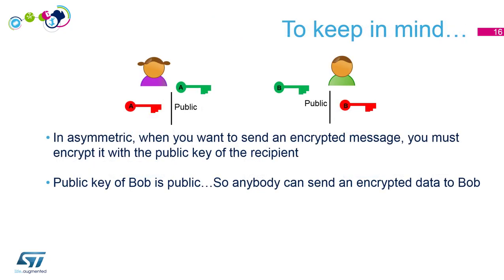So to keep in mind: in an asymmetric system, when you want to encrypt a message, you must do it with the public key of the recipient. And also keep in mind: public key is public — anybody can use it or have access to it. Now let's do a short hands-on about this topic.